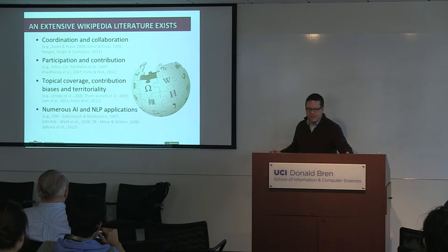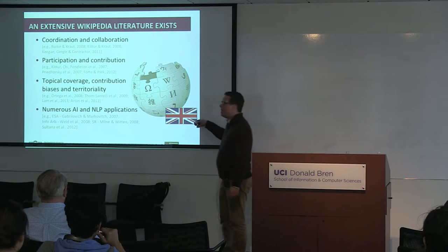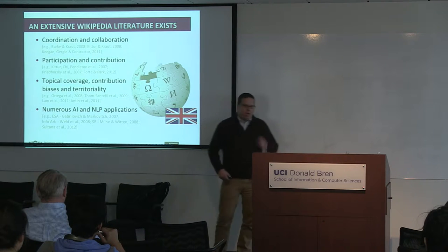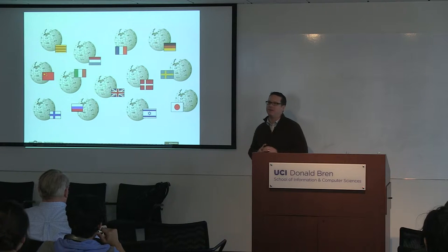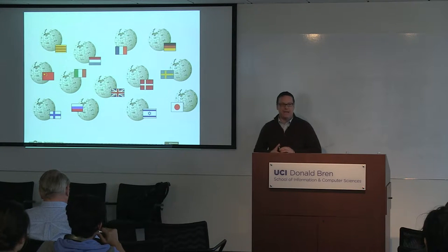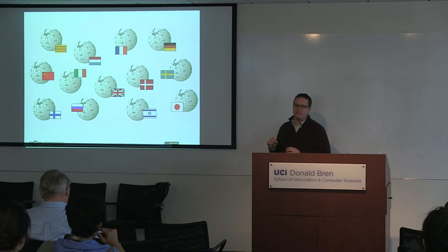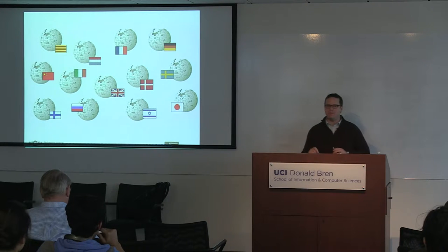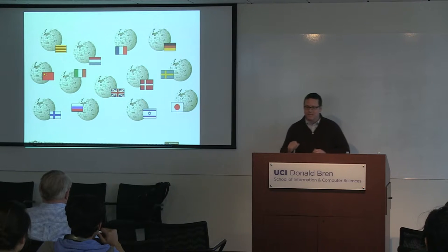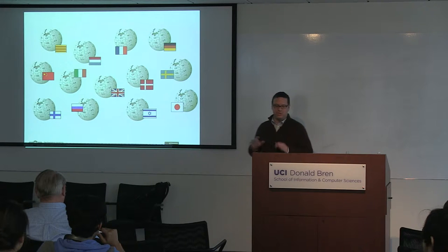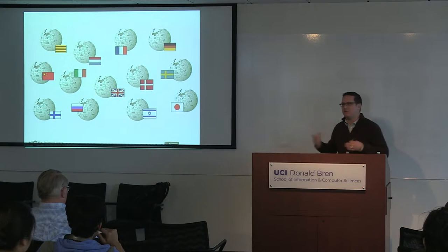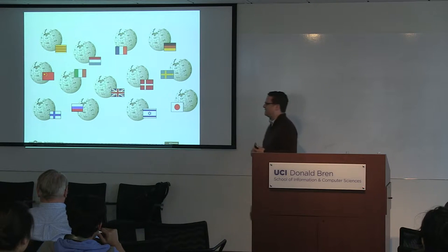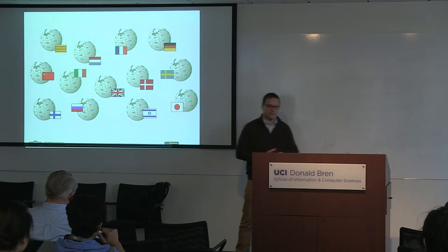That said, the vast majority of this research has focused almost exclusively on the English Wikipedia. Yet there are over 280 active Wikipedia language editions right now. There's an implicit and problematic assumption in a lot of that prior work — some of which is my own — that people in different parts of the world, speaking different languages, have access to the same information, participate and coordinate in similar ways, and exhibit similar coverage biases, without empirically investigating that.